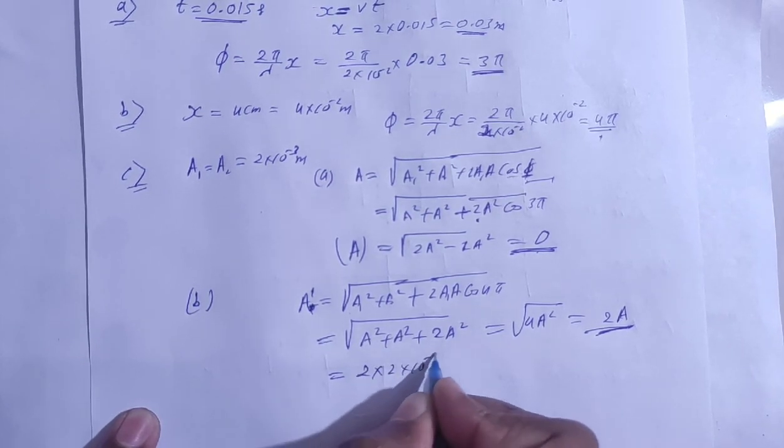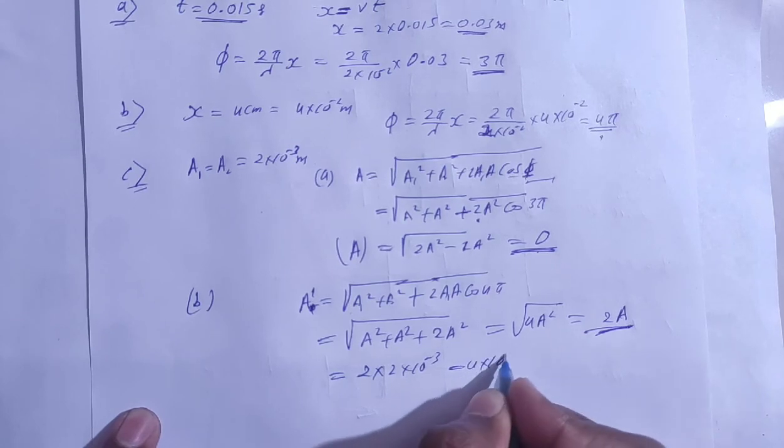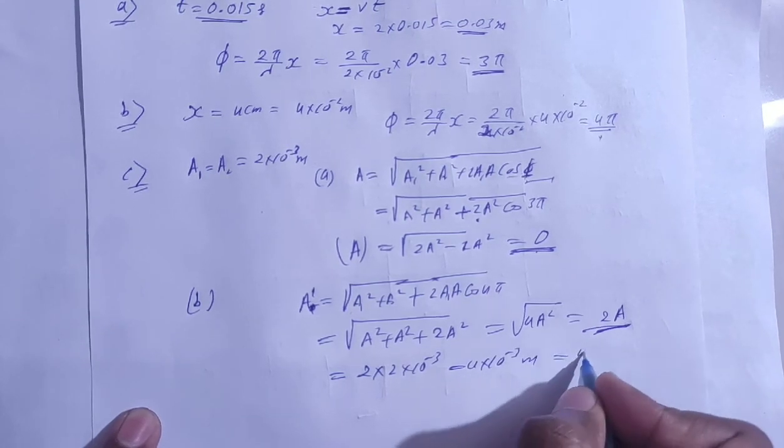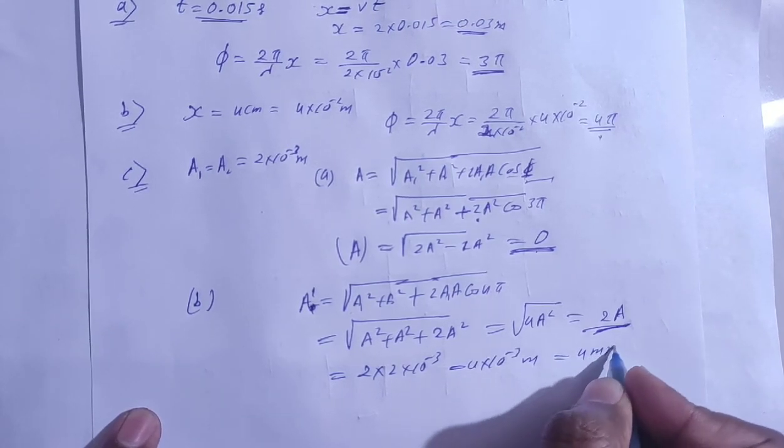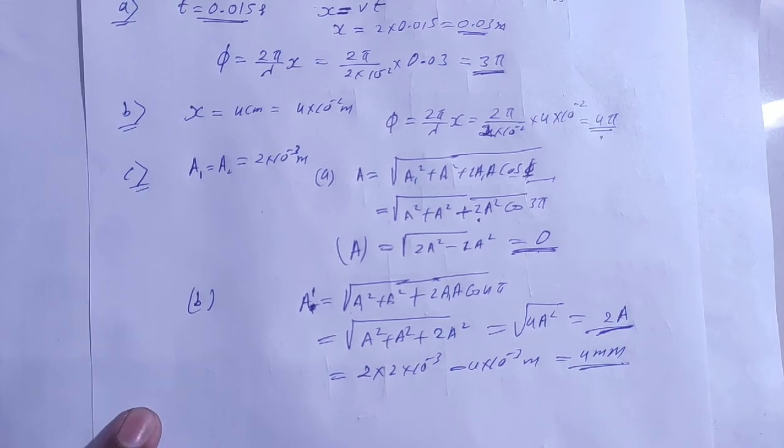4 into 10 power minus 3 meters, or 4 mm. Amplitude is 4 mm.